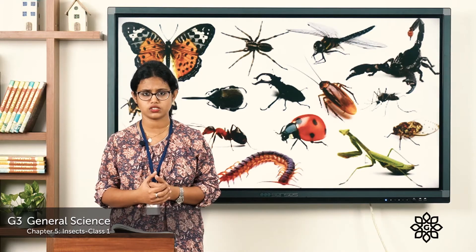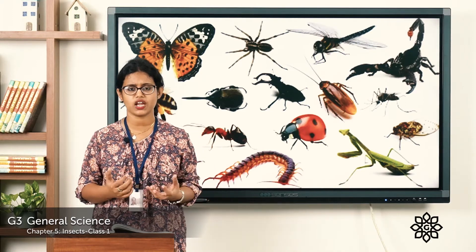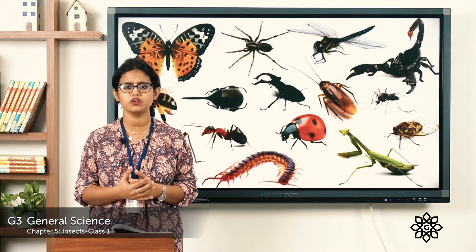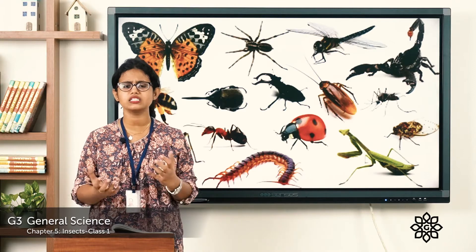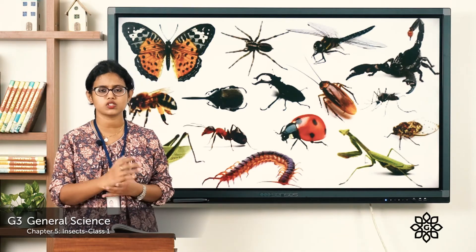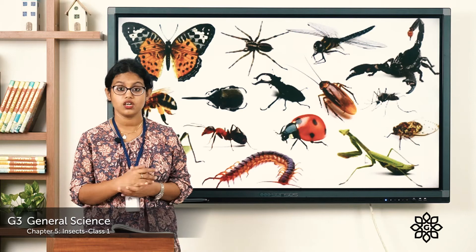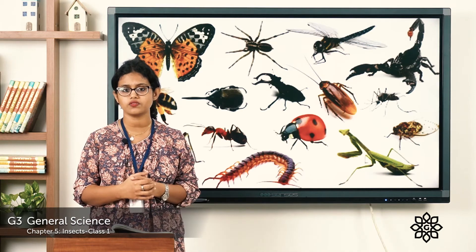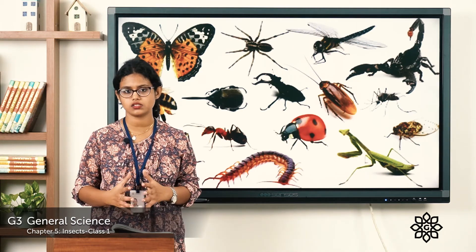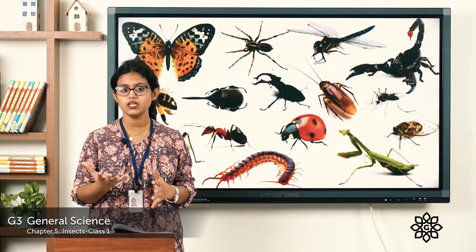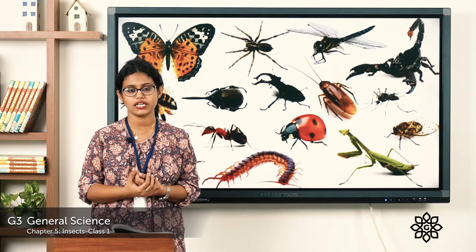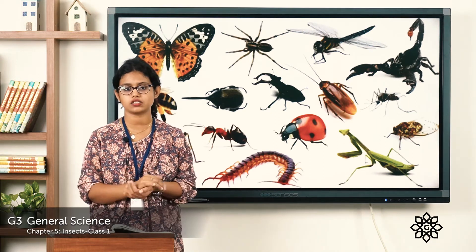There are many examples of insects like butterflies, bees, moths, and grasshoppers. All these are examples of insects. How many legs do these insects have? They have six legs. Most insects fly, and there are even insects which cannot fly, like the ant.